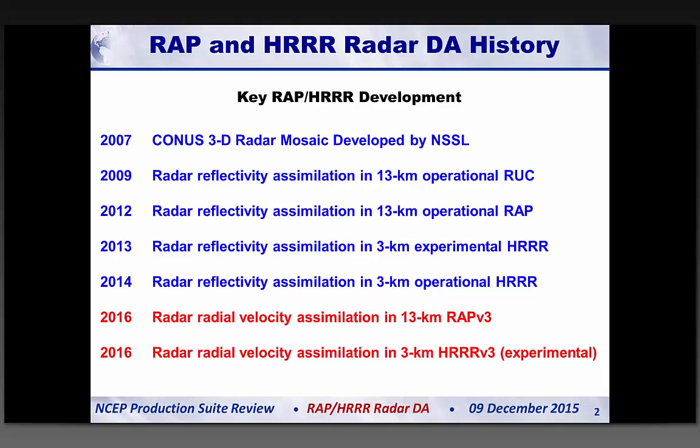We transitioned into the convective-allowance regime with the HRRR in 2013, which was operationally implemented in 2014. Now we're looking ahead to radar radial velocity assimilation — first in the RAP operationally next year, then in the HRRR. But today's focus is on reflectivity data assimilation.